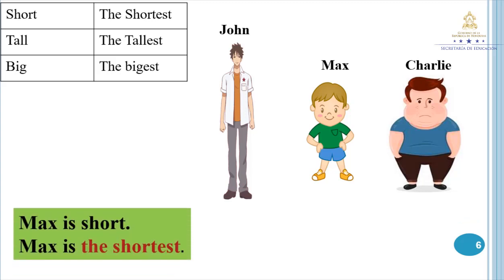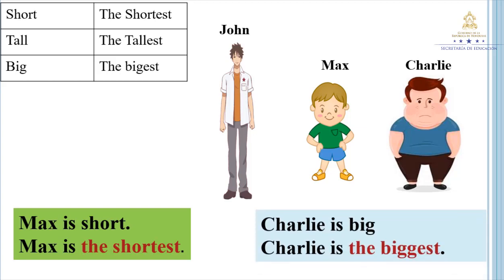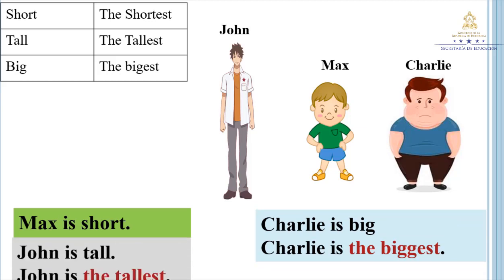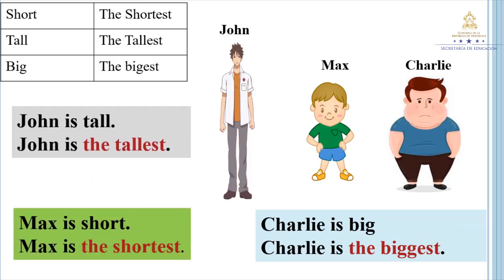Max is short. Max is the shortest. Charlie is big. Charlie is the biggest. John is tall. John is the tallest.